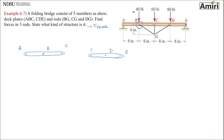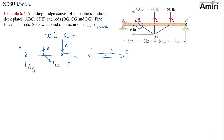Point A is a roller, so it has only an AY. Point B has an existing 40 pounds on top of it, but also is connected to a two-force member BG. So it's going to have a force along BG, either tension or compression. Point C is a pin. Point C is going to have CX and CY on that pin. It also has an existing force of 60 pounds on top of it.